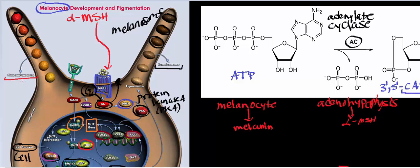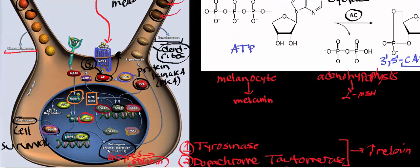Tyrosinase and dopachrome tautomerase are packaged into melanosomes, where melanin synthesis and polymerization occur. The little arms coming off the melanocyte are called melanocyte dendrites. The dendrites are also responsible for transferring the melanin polymers into other cells like your skin cells, which we'll cover in another video.